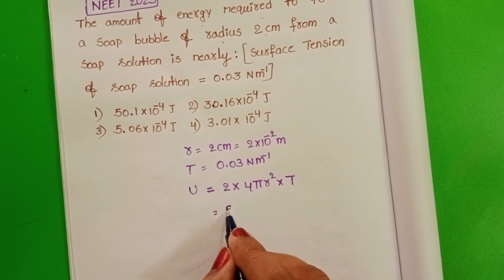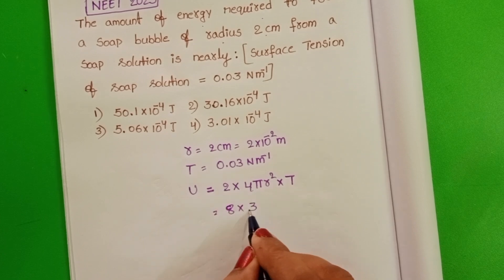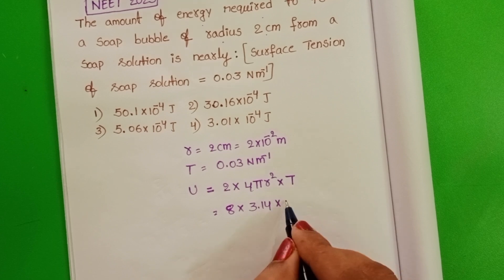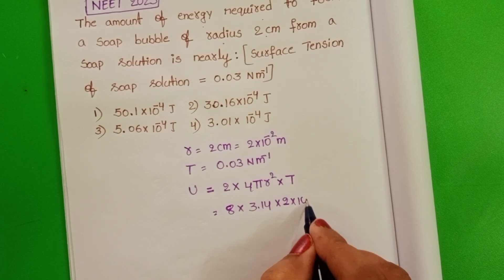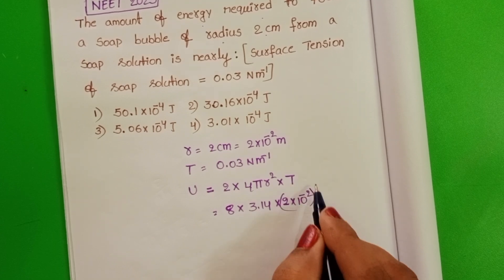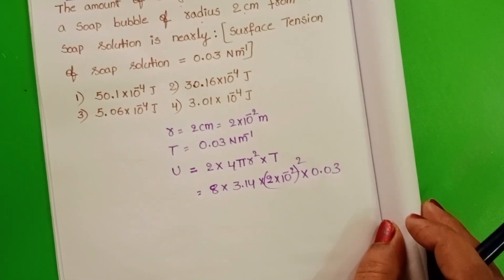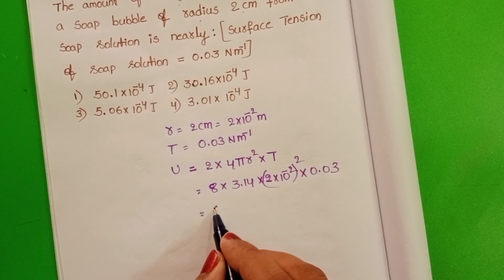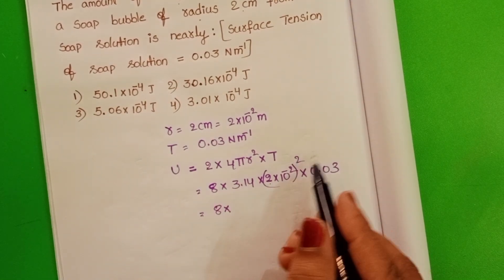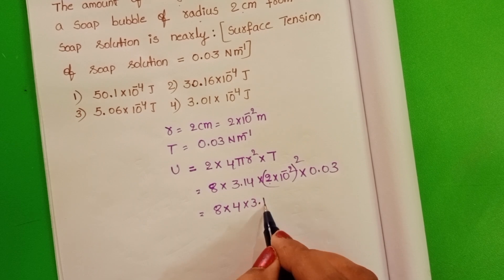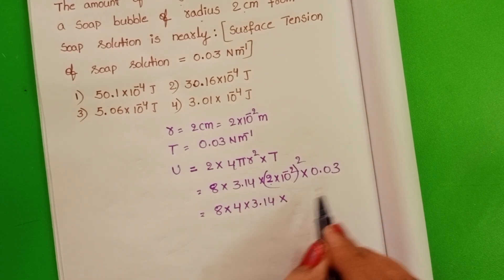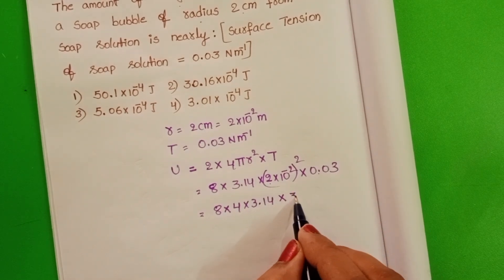2 into 4... 8 pi value 3.14. Radius is 2 into 10 power minus 2 whole square into surface tension 0.03. 8 into 2 whole square is 4. 3.14 into 4 into 0.03.